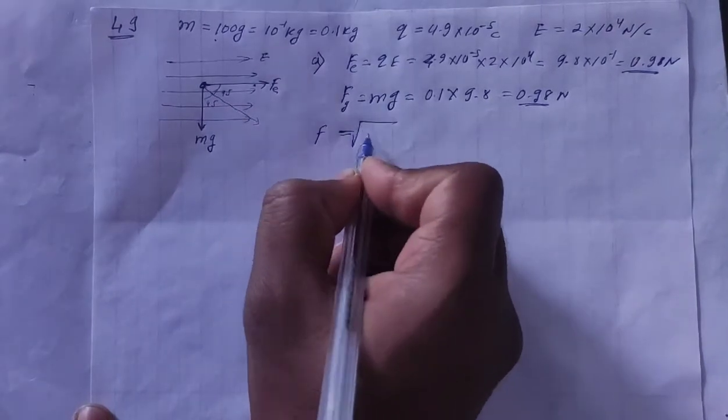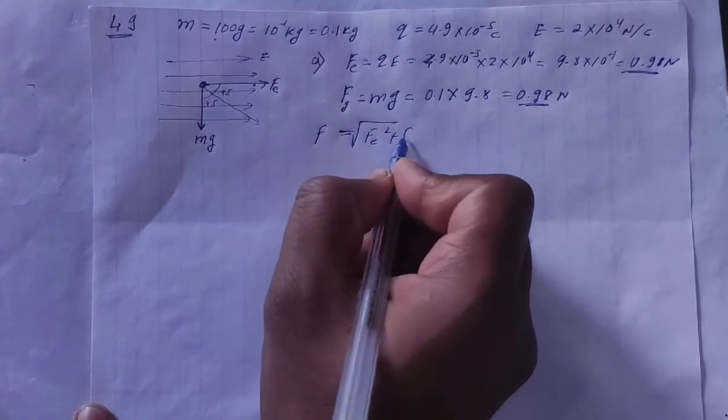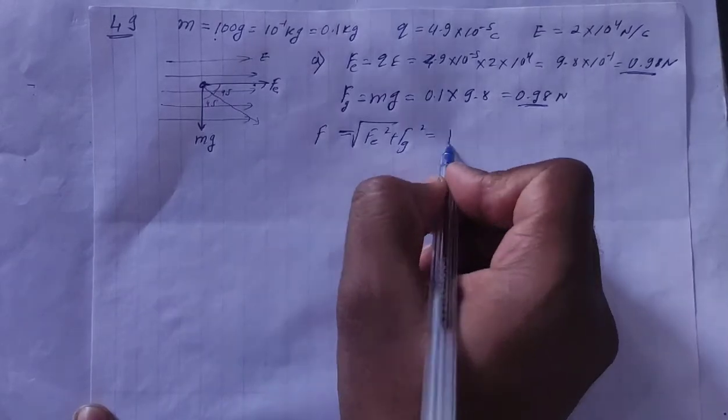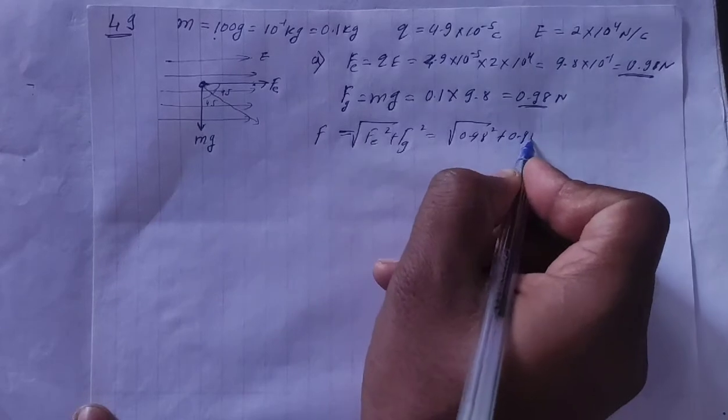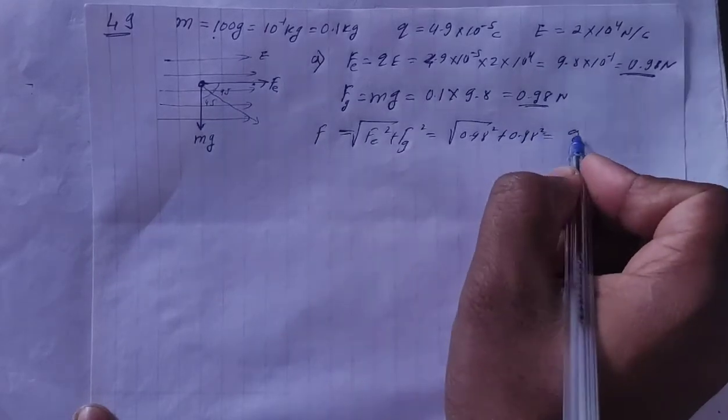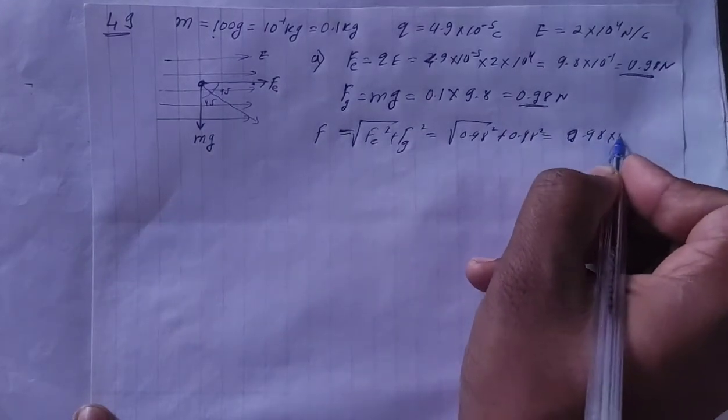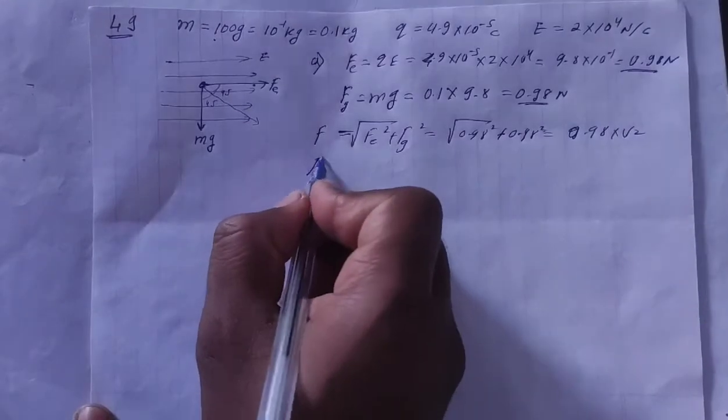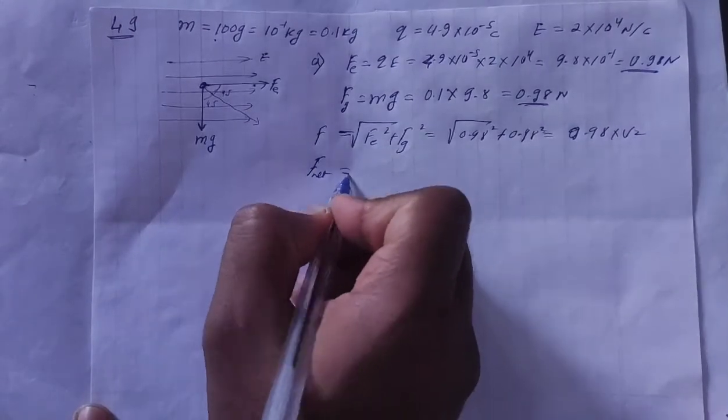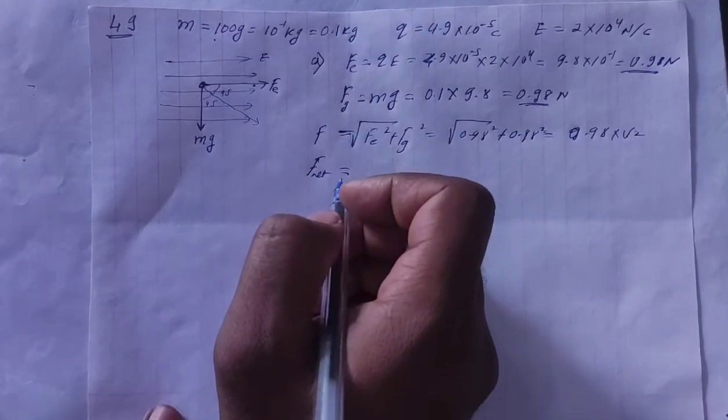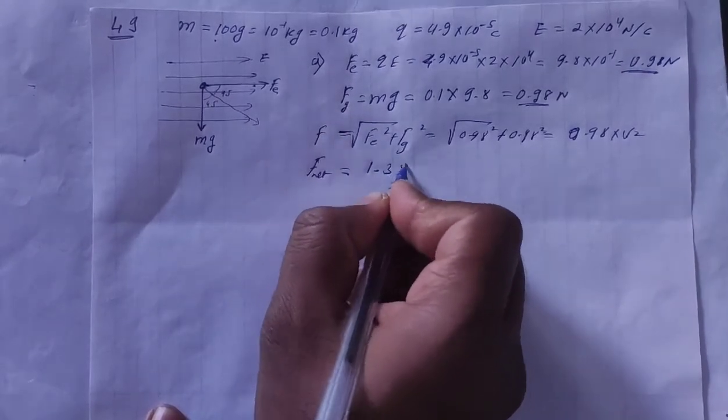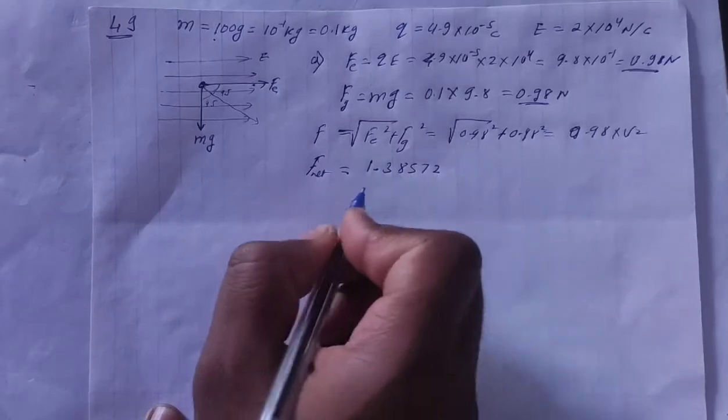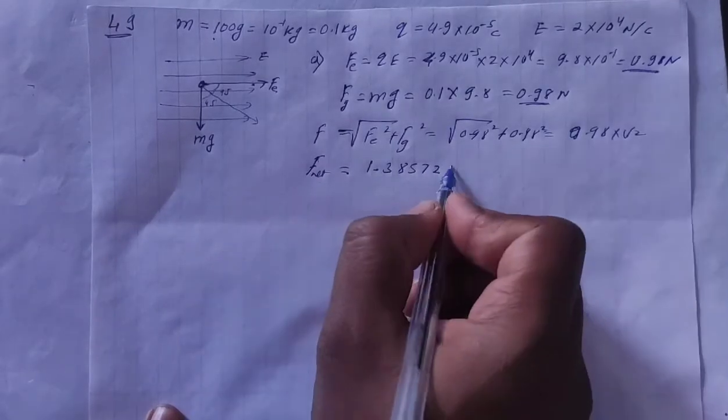F net is equal to root Fe square plus Fg square. Right? That is, 0.98 ka square plus 0.98 ka square. That is, this will be 0.98 into root 2. If we solve this, we will get F net. How much will it be? F net will be 1.38572.